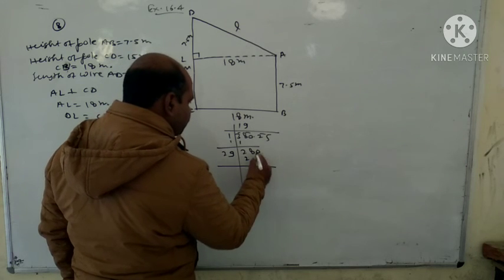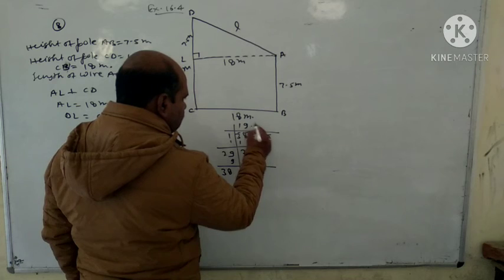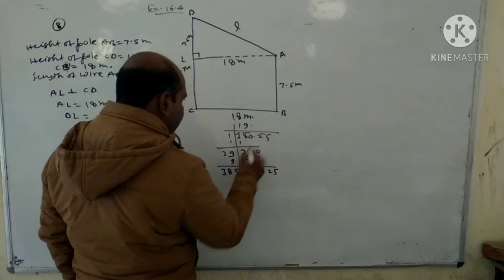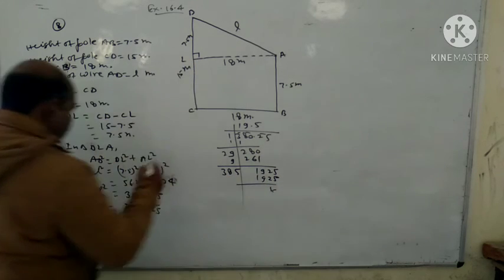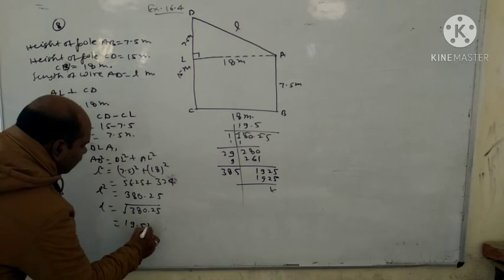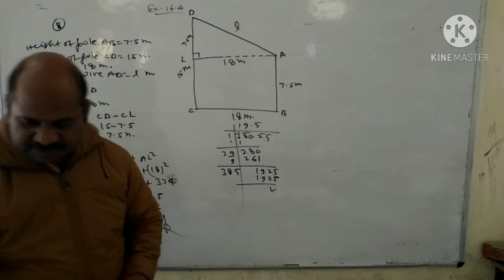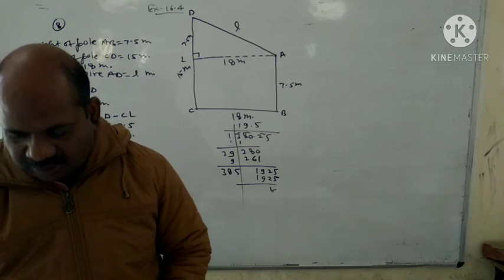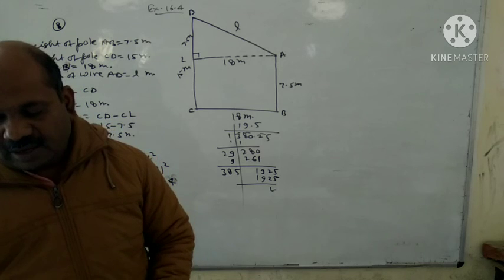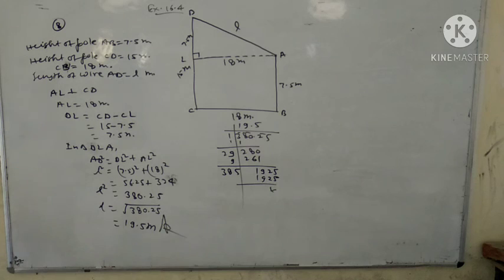Solving the calculation: AD square equals DL square plus AL square, giving approximately 90.5 meters. So this is our answer for the length of the wire. The remaining questions we will see tomorrow. Okay, that's all about it. Thank you.